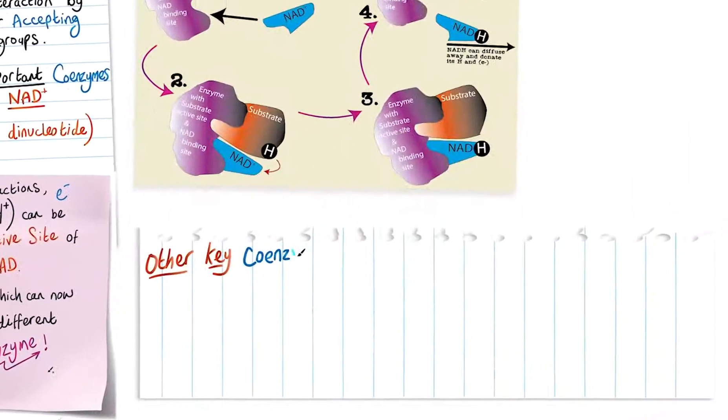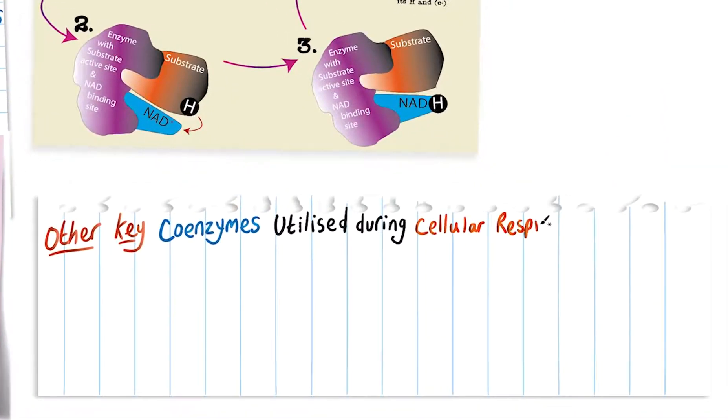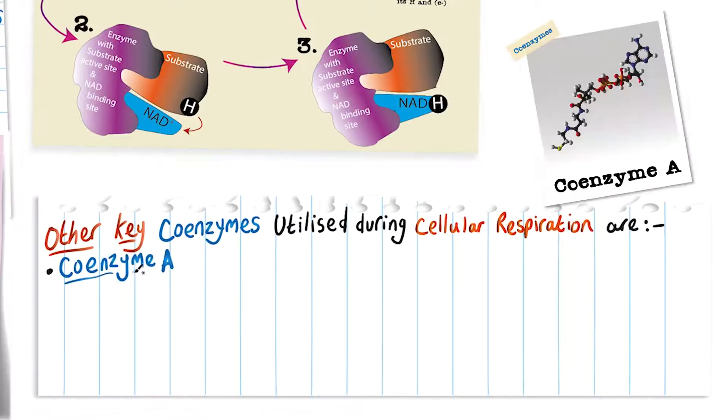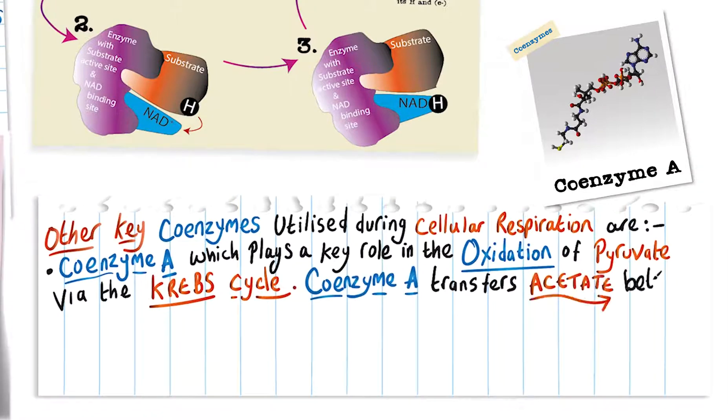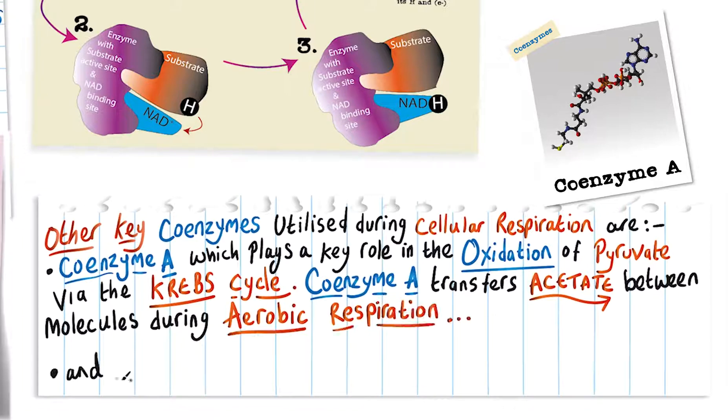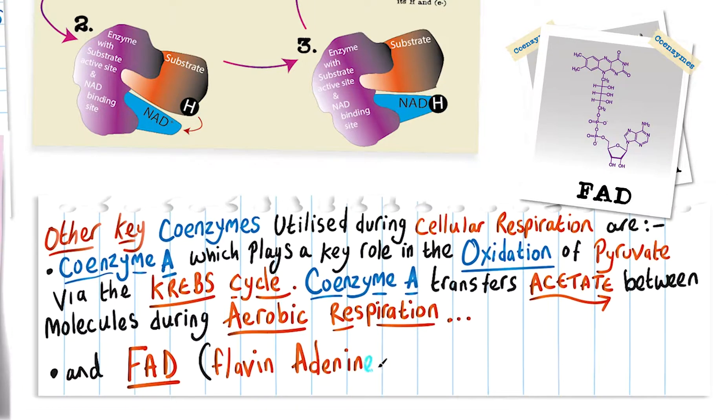Other key coenzymes utilized during cellular respiration are coenzyme A, which plays a key role in the oxidation of pyruvate by the Krebs cycle. Remember, coenzyme A transfers acetate between molecules during aerobic respiration and FAD or flavine adenine dinucleotide.